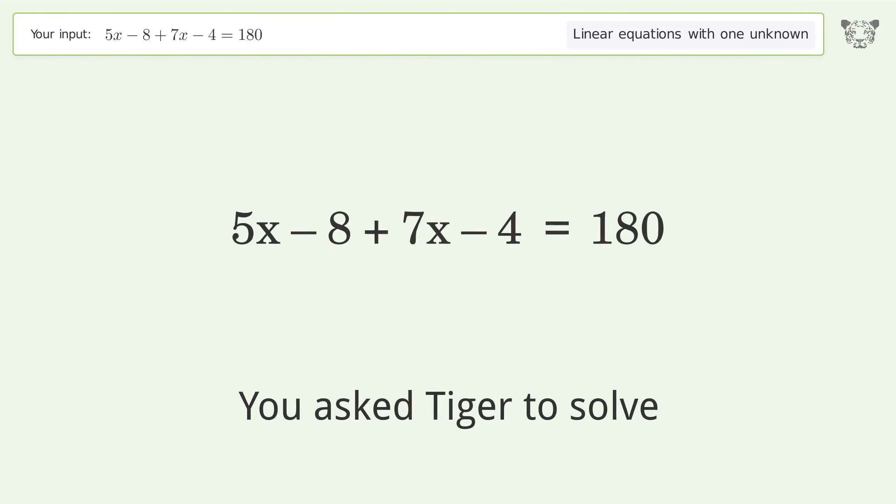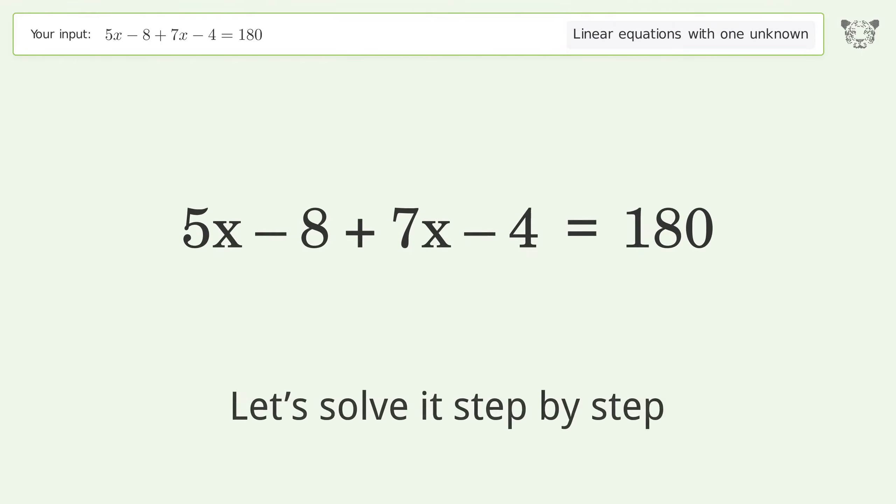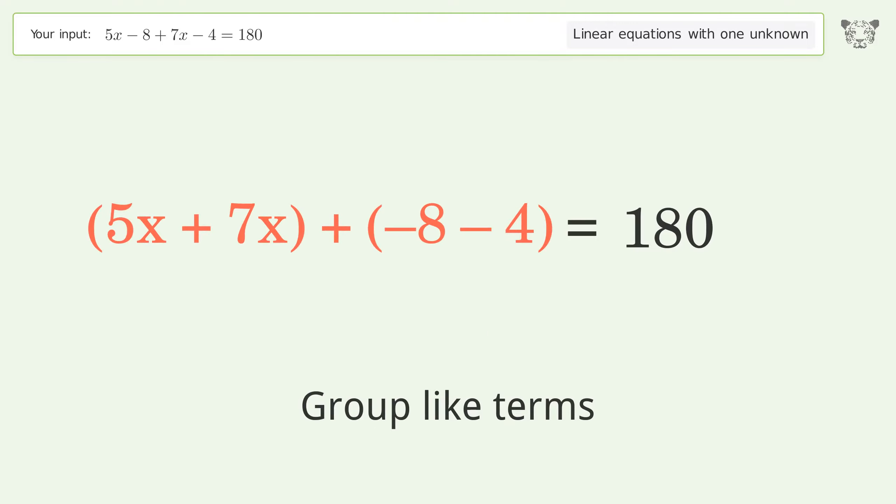You asked Tiger to solve this linear equation with one unknown. The final result is x equals 16. Let's solve it step by step: simplify the expression, group like terms, simplify the arithmetic.